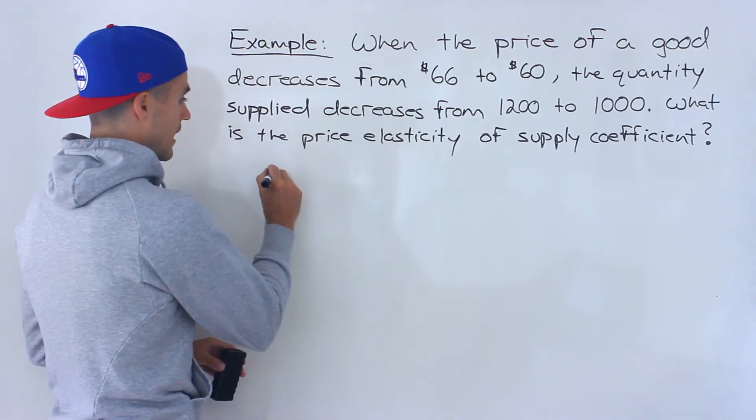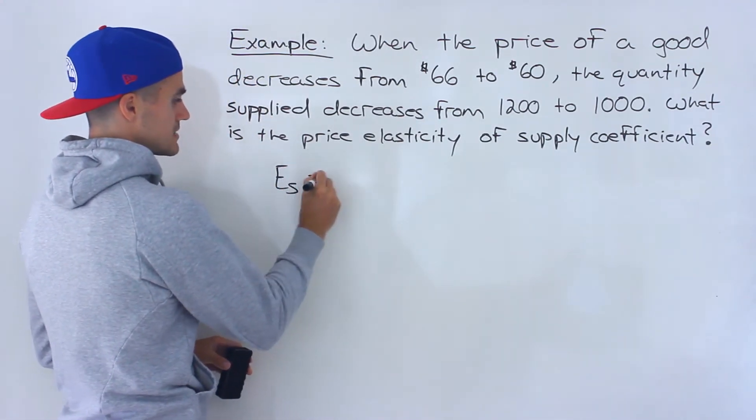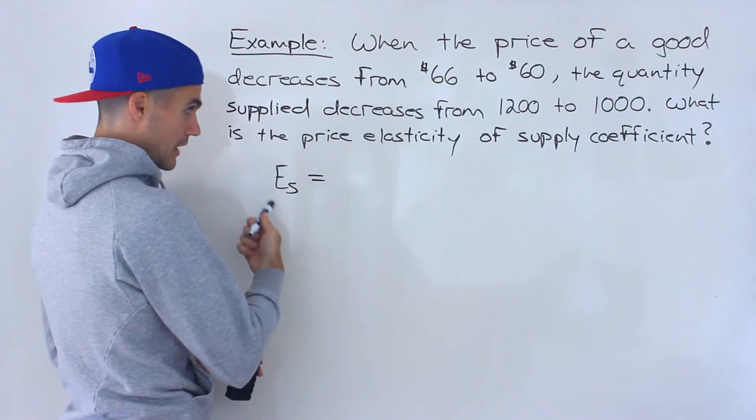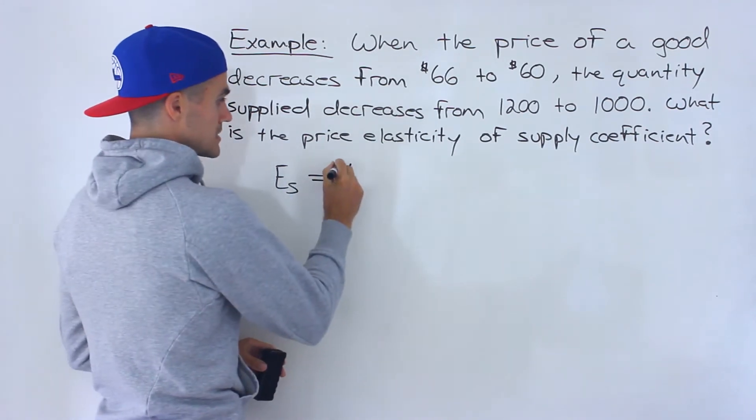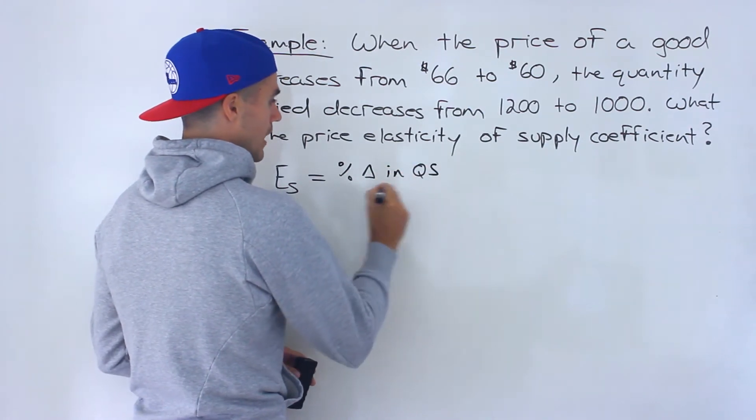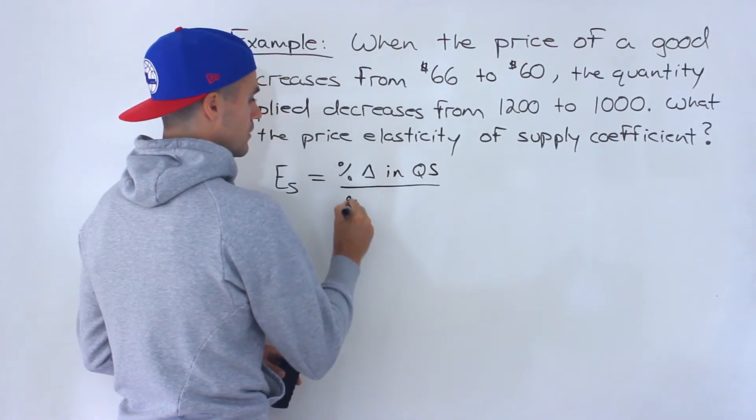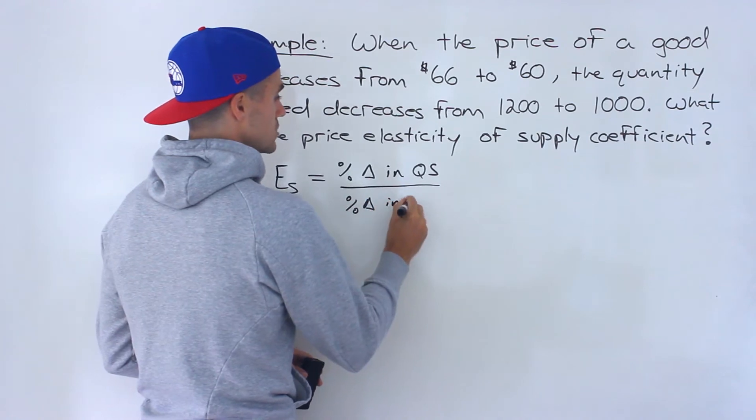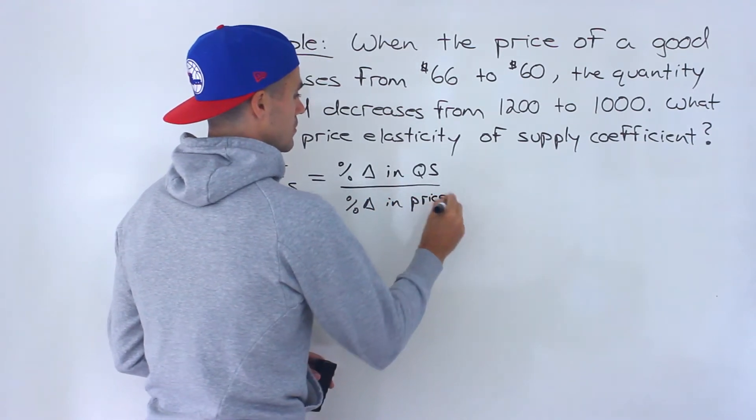So just a recap, the price elasticity of supply coefficient formula is basically the percentage change in quantity supplied over the percentage change in price.